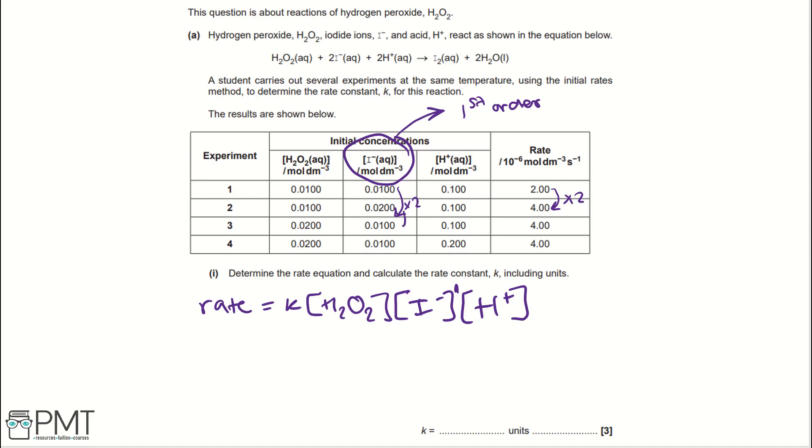If we know that I- is first order, then when it's dividing by 2, hydrogen peroxide is increasing by times 2 and H+ is staying the same. Well, the rate is increasing by times 1. It's not really changing. And if we know that I- is first order, we would expect rate to half. But it hasn't. It stayed the same.